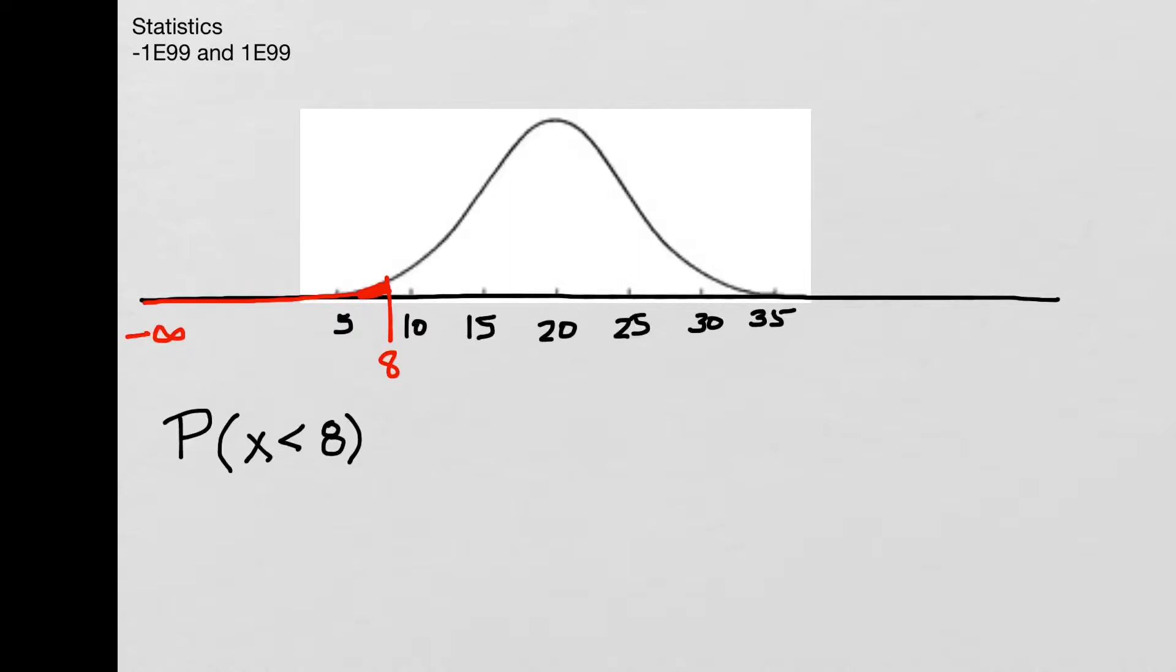So when I have something to enter, and I want to put in normalcdf, and what I really want to do is go negative infinity to 8, and the mean is 20, and the standard deviation is 5. The graphing calculator won't let you do that. We're not allowed to put in a negative infinity, or at least there's no negative infinity button.